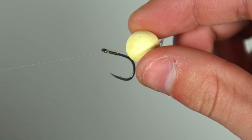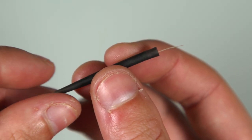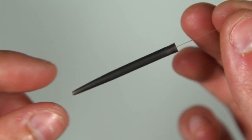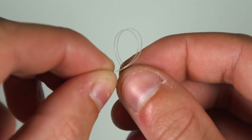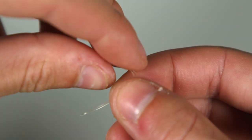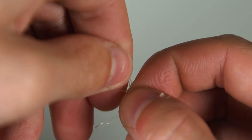With the hook and bait attached you can now thread on your anti-tangle sleeve onto the hook link. Make sure you thread it on the correct way. Next tie a loop in the end of the hook link. A figure of 8 loop knot will do the job perfectly.